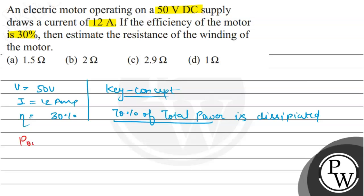So we calculate total power to be V into I, which is 50 into 12, and 70% of this power will be dissipated.